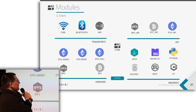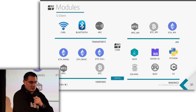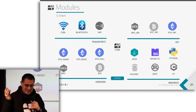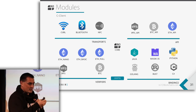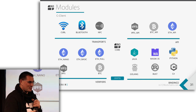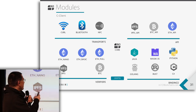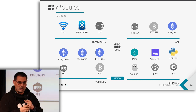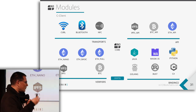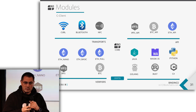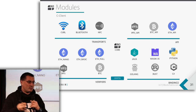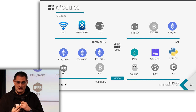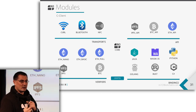In the C client we have some transfer protocols. You can use curl normally. We also have Bluetooth protocols, and NFC is coming next. We also have verifiers for different types of blockchains: the Ethereum protocol is completely fully implemented. We are working on Bitcoin, IPFS is also almost done, and we are looking into other blockchain implementations. ETH 2.0 is on our list, as well as Polkadot and other networks.